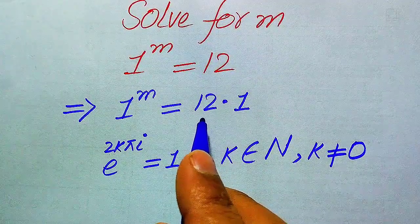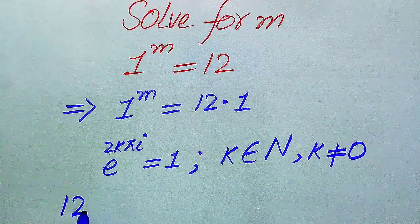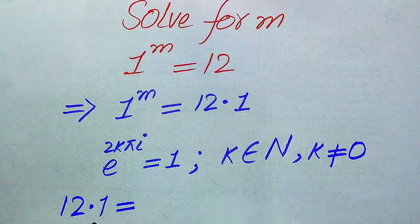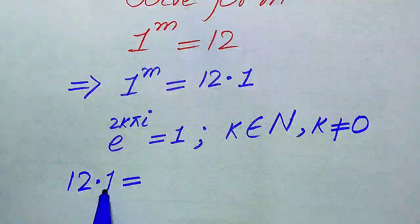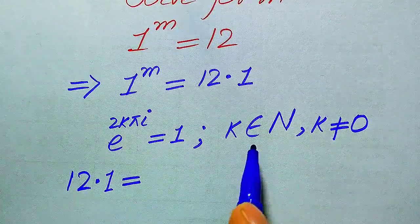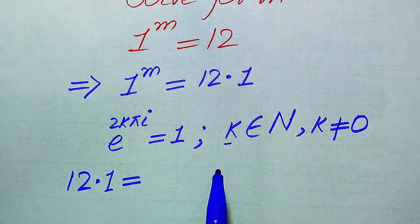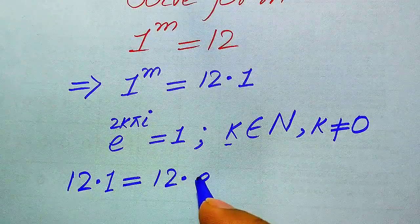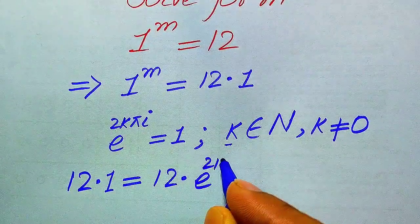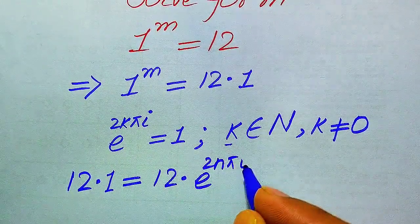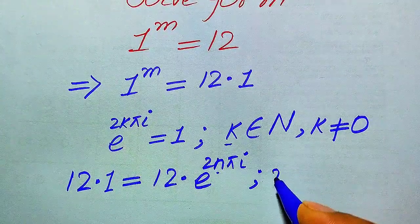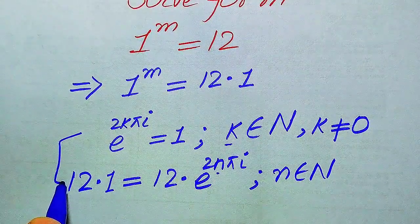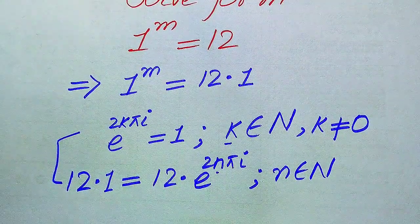In the right-hand side we have 12 times of 1. We write this 12 times of 1 by applying Euler's identity again, but here we change the variable. We use the variable n and write 12 as e to the power of 2n·π·i, where n should also belong to the natural numbers.